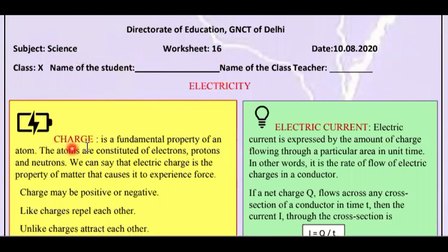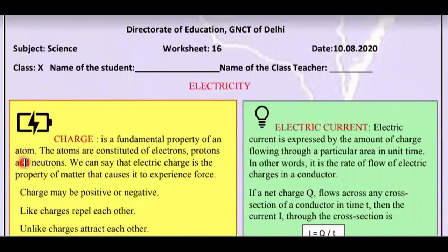First of all, I have told you about charge. What is charge? Charge is a fundamental property of an atom — a basic property of an atom. What are atoms and molecules? You already know this — you have done this in grade 9.